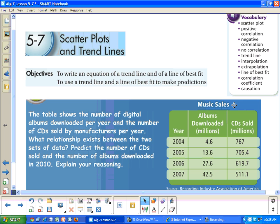All right, class, this is lesson 5.7, Scatter Plots and Trend Lines. Objectives: you will learn to write an equation of a trend line and a line of best fit, and you will learn how to use a trend line and a line of best fit to make predictions.